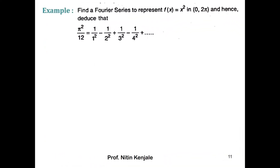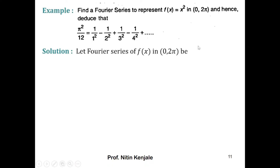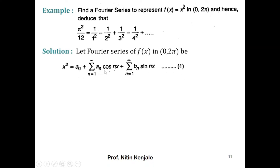Now let us see an example. The question is to find the Fourier series to represent f(x) = x² in the interval 0 to 2π, and hence deduce that π²/12 = 1/1² − 1/2² + 1/3² − ... Assuming f(x) = x² in the interval 0 to 2π obeys Dirichlet's conditions, we find the Fourier coefficients. Let the Fourier series of f(x) be a₀ + summation of aₙ cos(nx) + bₙ sin(nx), where n varies from 1 to infinity. The expression for a₀ is (1/2π) × integral from 0 to 2π of f(x) dx.